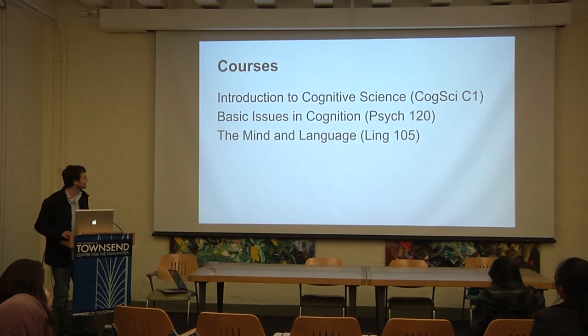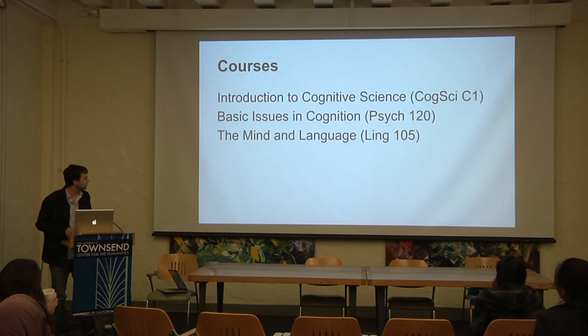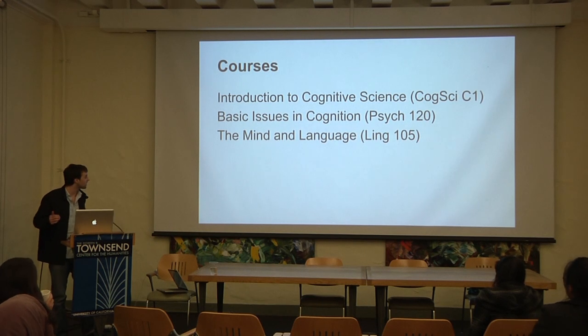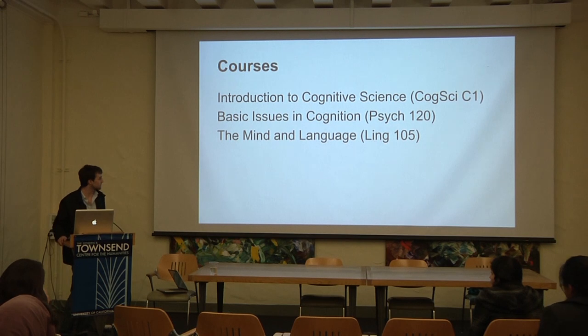The three classes I took are Introduction to Cognitive Science, Basic Issues in Cognition, and Mind and Language. I won't talk as much about Intro to CogSci as Joyce did, but the main thing I took away for design is that it was a very eye-opening class about how important our brains really are. Studying the mind from so many different directions really makes you realize how responsible our mind is for the way we perceive the world and the way we see everything.